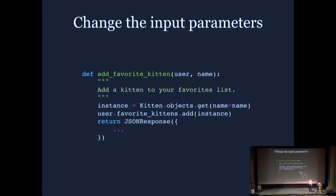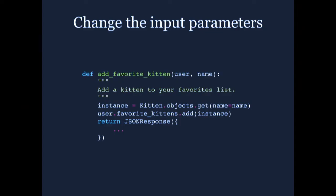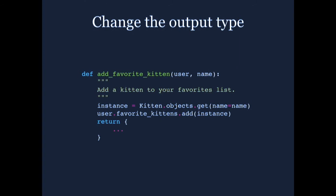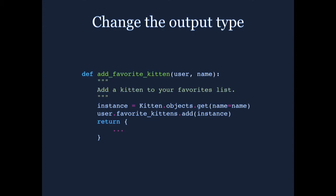In the case of 'add a favorite kitten,' what we've got is something that we'd like to call with: who is doing this operation, and what's the name of the kitten they want to add to their favorites list. Once you've got those two parameters, that's everything you need to affect that action. Similarly, it would be nice if, rather than returning HTTP responses from these functions, we were able to return plain data. Because at that point, you've got a function that more fundamentally expresses the intent of the action. It's also more reusable — you could use these views from one inside the other, which is difficult inside a request-response cycle.